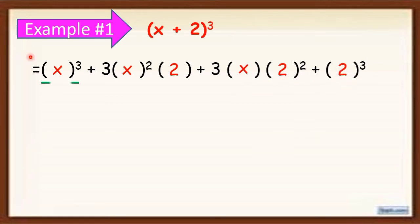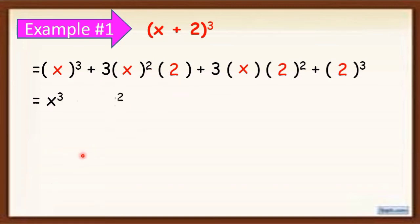Let's simplify. x quantity cubed is equal to x cubed. And 3 times x squared times 2 becomes 6x squared. Why? Because there is a coefficient of 1 here, so 3 times 1 times 2 equals 6, and x times x squared becomes x squared — that's why we have 6x squared.